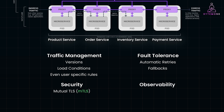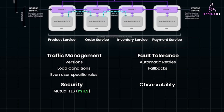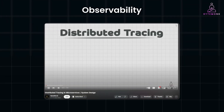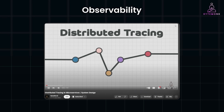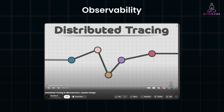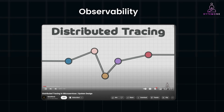Finally, one of the most challenging aspects of microservices is understanding how services are interacting in real time. Service mesh comes with built-in observability tools like distributed tracing and metrics collection. This lets you trace the journey of a request through multiple services, helping you detect bottlenecks, failures, or anomalies.